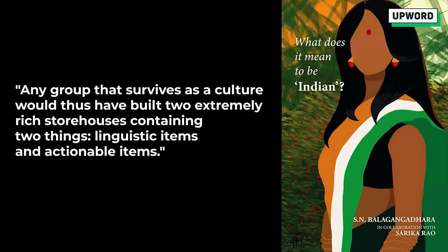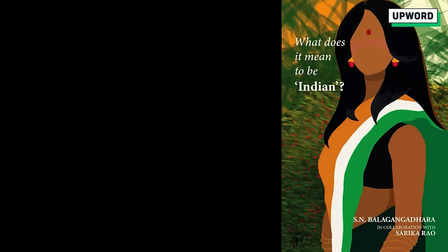The next chapter talks about what is culture. Balu emphasized on stories being the mode of transmission of knowledge and essentially forming the bedrock of a culture. Any group that survives as a culture would have built two extremely rich storehouses containing linguistic items and actionable items. Former is essentially language while latter are the institutions and both together determine our social interactions. Language is the kind of vocabulary we use to describe all of the interactions, the conceptual universe. What shapes the interaction between the two eventually leads to the configuration of different cultures.